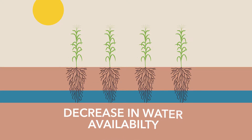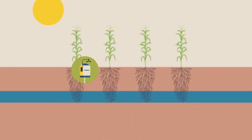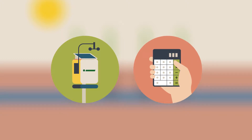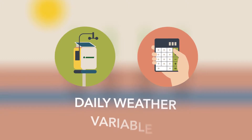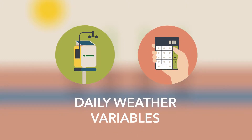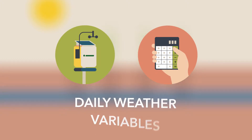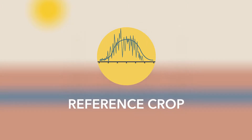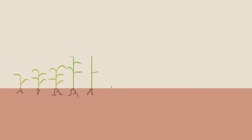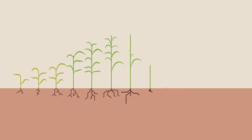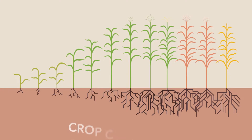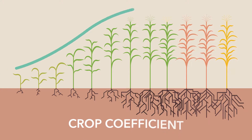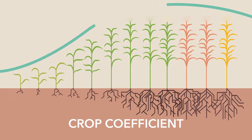This daily ET is usually retrieved via a weather station or hand-calculated based on various weather variables. It's important to note that these ET numbers are based on a generic reference crop. To determine the daily ET for your specific crop in the field, this reference ET must then be multiplied by a crop coefficient for your specific crop type and hybrid.